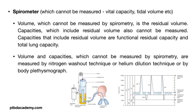Volumes which cannot be measured by spirometry include residual volume. Capacities that include residual volume — specifically functional residual capacity and total lung capacity — also cannot be measured using a spirometer. These are measured instead by nitrogen washout technique, helium dilution technique, or by body plethysmograph.